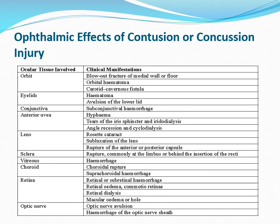This table enumerates the tissue involved and the manifestations. In the orbit: blowout fracture. Eyelid: hematoma. Conjunctiva: subconjunctival hemorrhage. Anterior uvea: hyphema, tears of the iris sphincter, iridodialysis, angle recession, and cyclodialysis. Lens: rosette cataract, subluxation, rupture of the anterior-posterior capsule. Sclera: rupture, vitreous hemorrhage. Choroid: choroidal rupture and suprachoroidal hemorrhage. Retina: retinal or subretinal hemorrhage, retinal edema, commotio retinae, retinal dialysis, macular edema. Optic nerve: avulsion or hemorrhage of the optic nerve sheath.